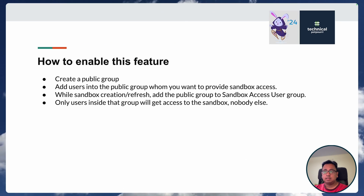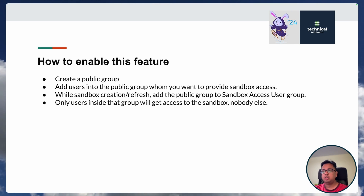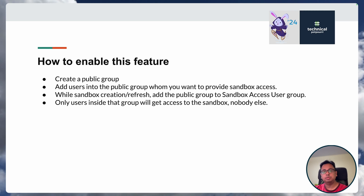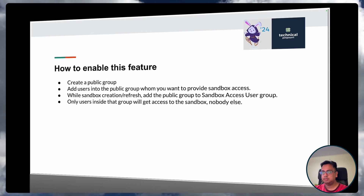Let's understand how to enable this feature — it's very easy. First, you create a public group. Second, add the users to the public group whom you want to provide sandbox access. Third — and this is important — during sandbox creation or refresh, add that public group to the sandbox access user group. That way, only the users inside that group will get access to the sandbox, and nobody else.